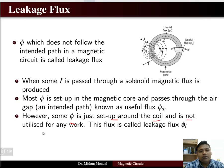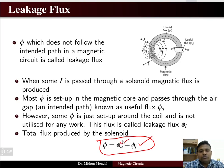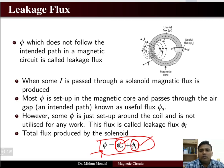Some flux is set up around the coil and is not utilized for any work — this is the leakage flux. The total flux is the sum of the leakage flux plus the useful flux set up in the core. The useful flux is the one being utilized in the core, leakage flux is not utilized, and together they give the total amount of flux.